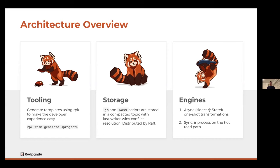The second version is what we're calling the synchronous engine. This is where we embed the WebAssembly engine directly in the Red Panda process and run the custom functions on the hot read path — essentially as part of a fetch request coming from consumers. Let's talk about the differences between these two architectures and the different characteristics they deliver.